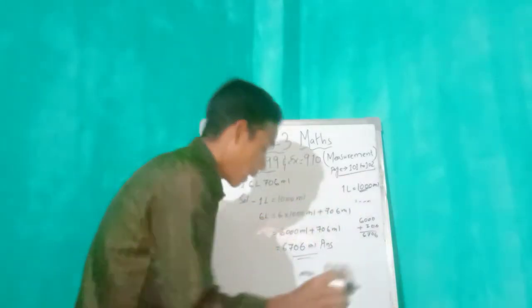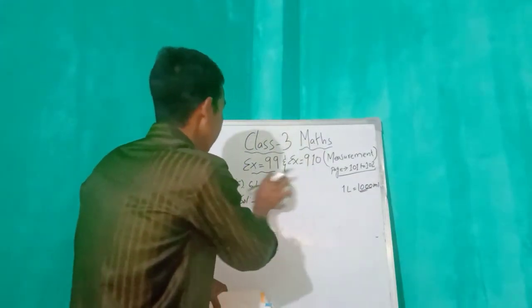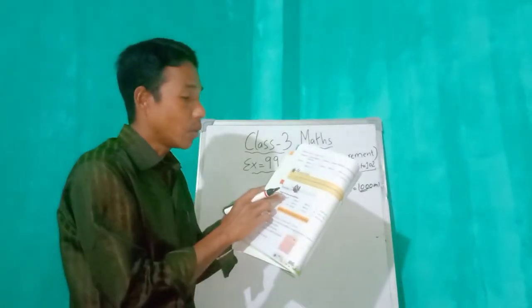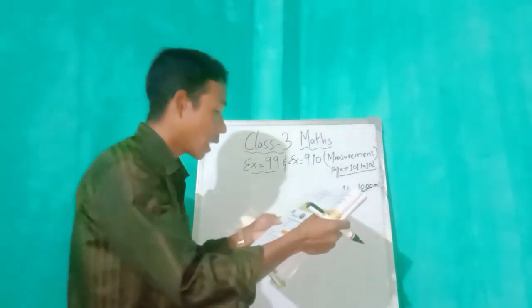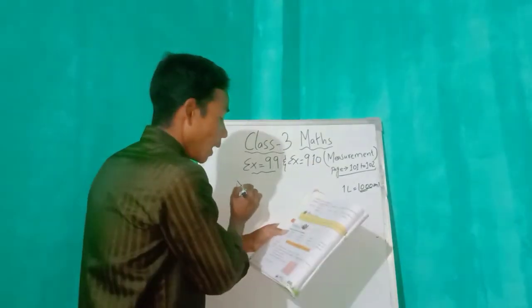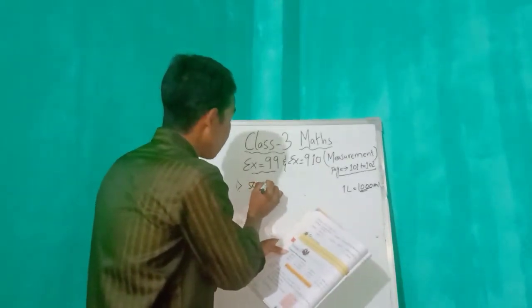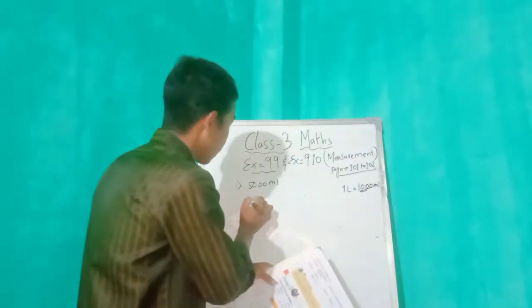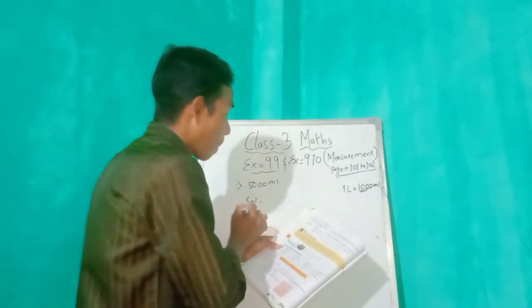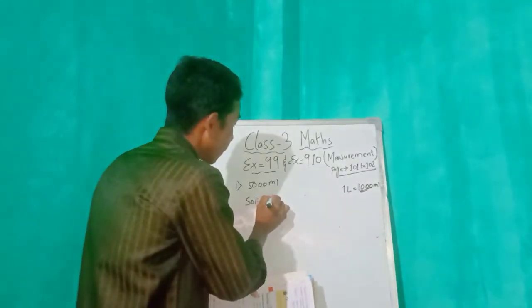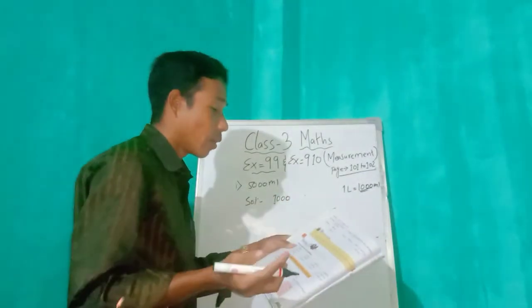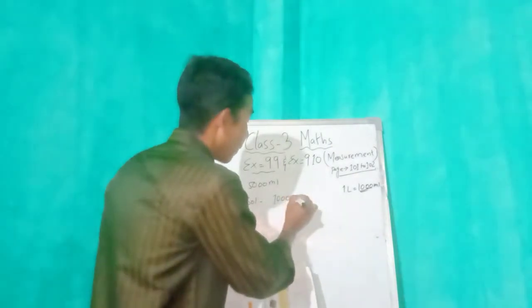Now we will do Exercise 9.10. Convert into liters and milliliters. Number one: it is given here — 5000 mL. So how will we do this? One thousand mL will convert into one liter.